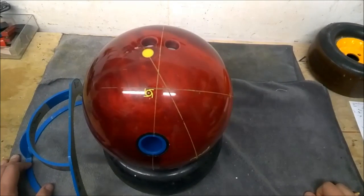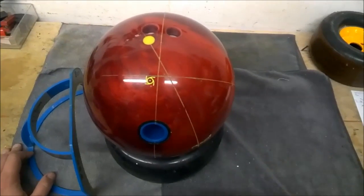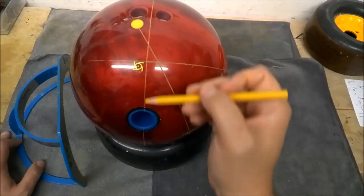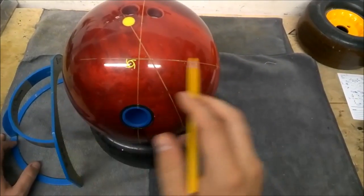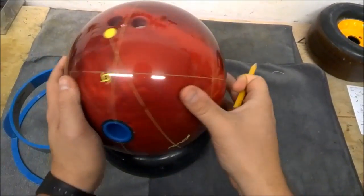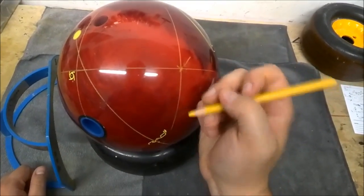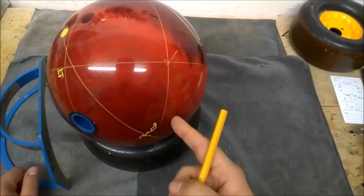Today we're going to show you how to find your dual angle layout after your ball has already been drilled. So the first thing you want to do is draw your grip line and then draw your center line and find your PAP, minus four and a half over. You then want to draw your VAL.